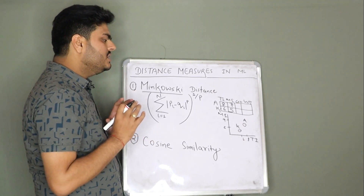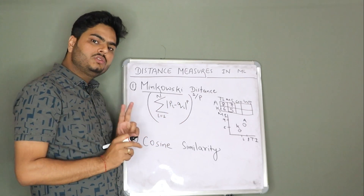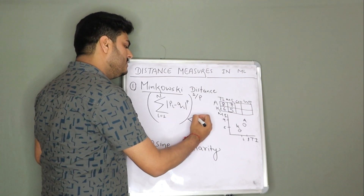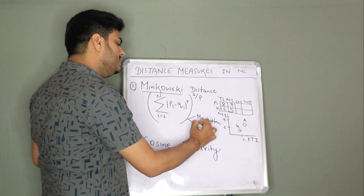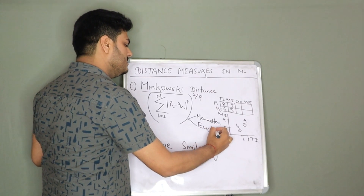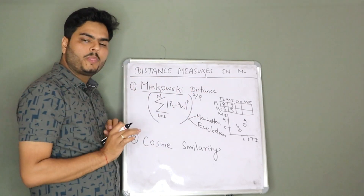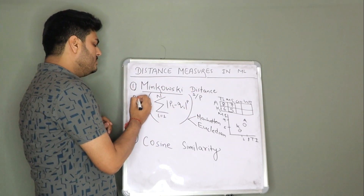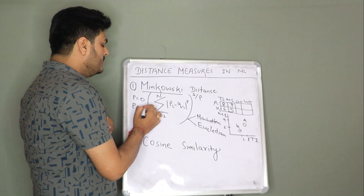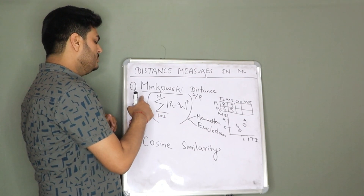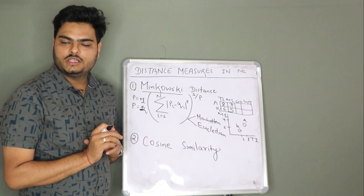But to understand how these distances are calculated — the basis of two main distances, Manhattan and Euclidean — is Minkowski distance. In this formula, if you make p equal to 1, it becomes Manhattan distance. And if you make p equal to 2, it becomes Euclidean distance.